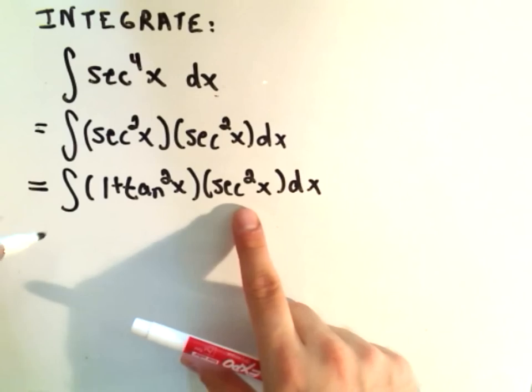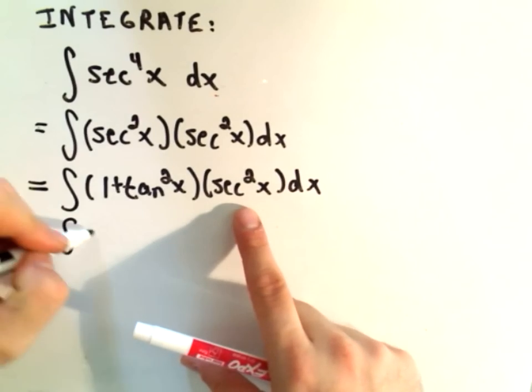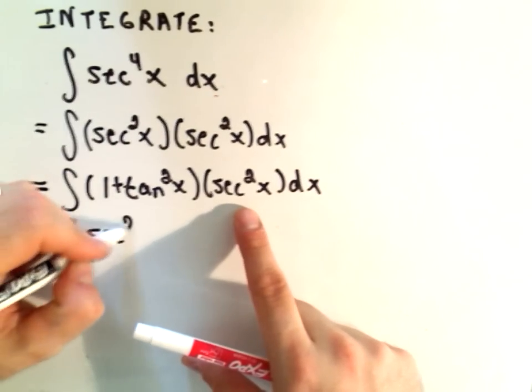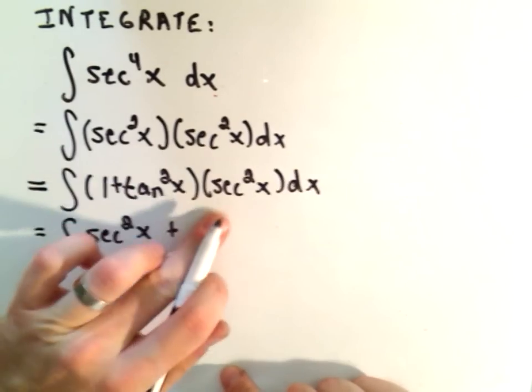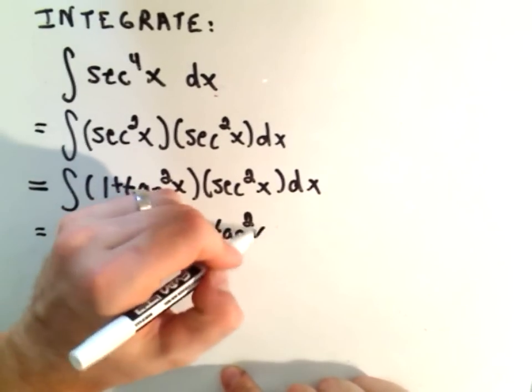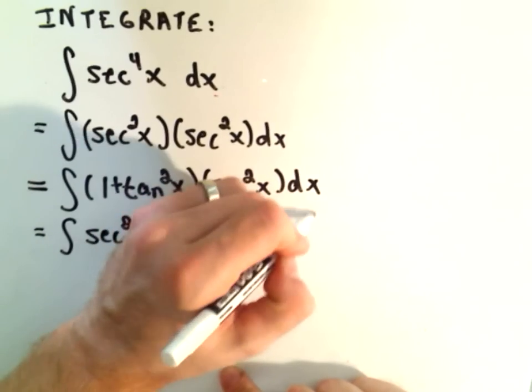Well, again, we can use this trig identity for secant squared, that secant squared is 1 plus tangent squared. So I'm going to replace this with 1 plus tangent squared. I've got my other original secant squared hanging out there, just chilling out.